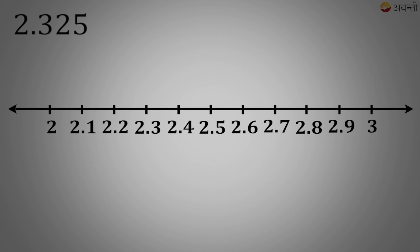So the numbers over here would be 2.1, 2.2, 2.3 and so on. Our number is 2.325, so this number is definitely greater than 2.3 but lesser than 2.4.